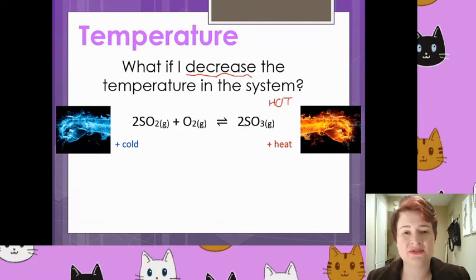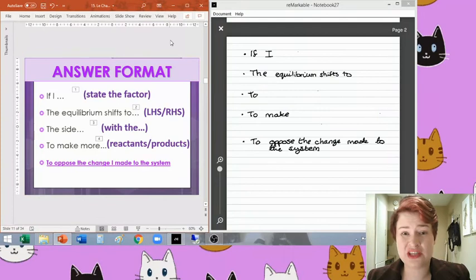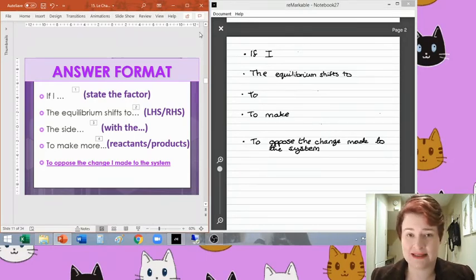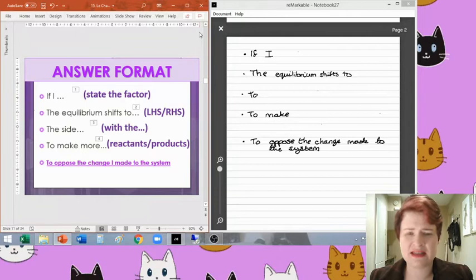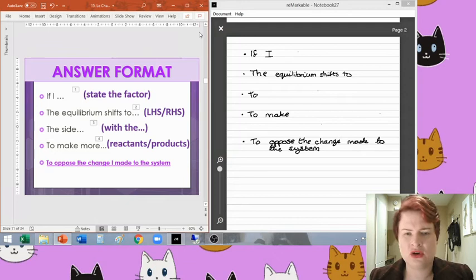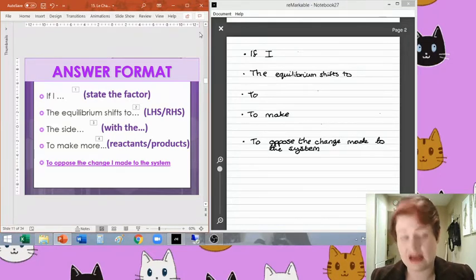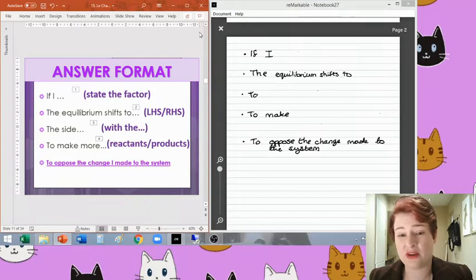Let's take this back to our answer format we discussed last time. We're going to start with 'if I' and state the factor that is changing. Then 'the equilibrium shifts to' — either the left-hand side or the right-hand side — 'to the side with.' With temperature, we're going to say to the cold side or the hot side, or more precisely to the exothermic or to the endothermic side. Then 'to make more' — specify what you're making more of — and the final statement: 'to oppose the change I made to the system.'